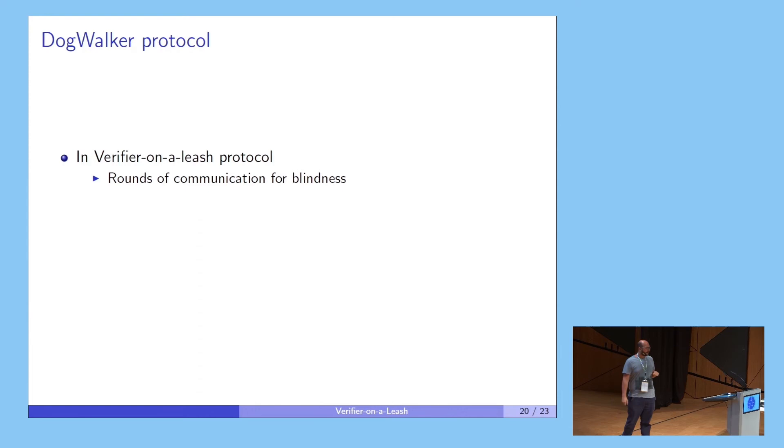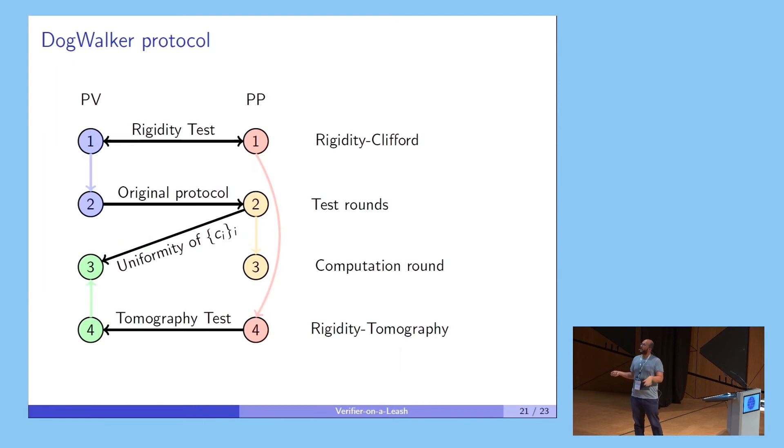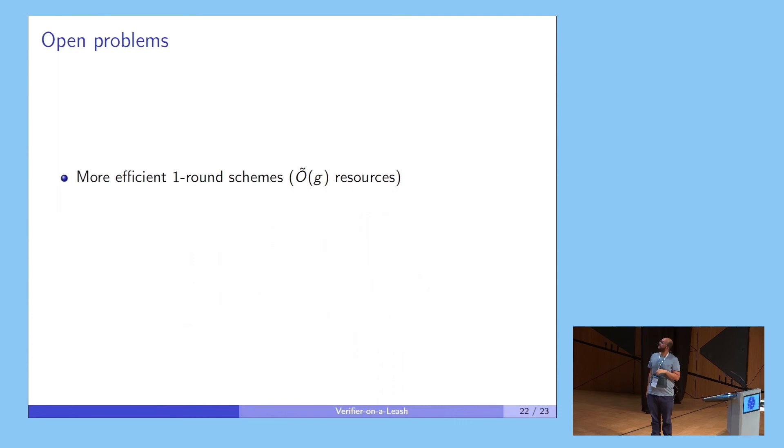In this protocol, we need order D rounds of communication in order to achieve soundness. And then in the dog walker protocol, we actually tell PV what the circuit is, and we ask PV to be exactly the verifier in Broadbent's protocol. So he has much more power. But more power, more responsibility, so we also have to test if knowing Q wouldn't allow PV to cheat more. So he couldn't have some strategy to fool the verifier. We have a much more complicated set of leashes here. That's why we call it the dog walker protocol. For this, we need to somehow strengthen our rigidity theorem for adding some tomography there.